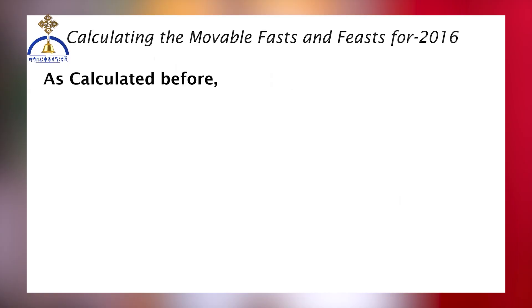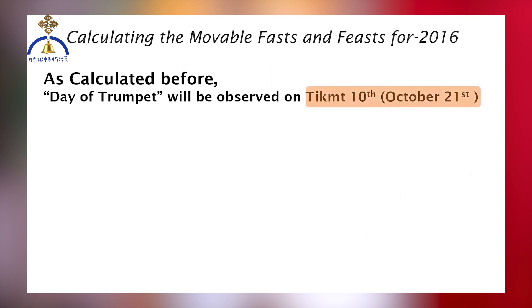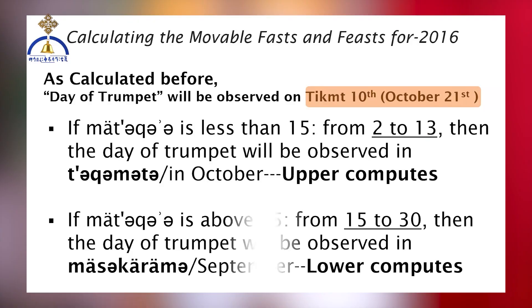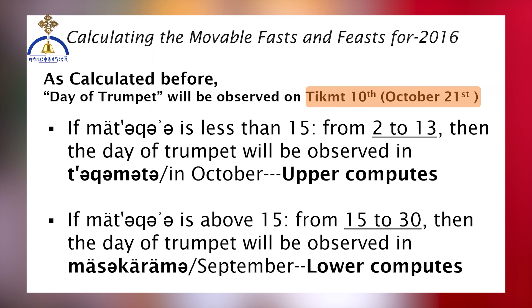Furthermore, the Day of Trumpet, which signifies the month and day of the Lunar New Year, will be observed on Tegumt 21, or October 21st. The previously calculated MEDC value of 10, falling within the range of 2 to 13, designates the observance in Tegumt. If the MEDC had been between 15 and 30, the Day of Trumpet would have been observed in September. This crucial information enables us to identify the starting days of the movable fasts and feasts for the Ethiopian calendar year 2016.